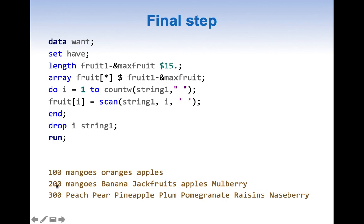For idnum 200, string1 has 5 words, so fruit1 through fruit5 are populated and fruit6 and fruit7 are null. For idnum 300, DO i = 1 to COUNTW(string1) gives a value of 7, so fruit1 has peach, fruit2 has pear, fruit3 has pineapple, fruit4 has plum, and so on through fruit7 which has nashberry.